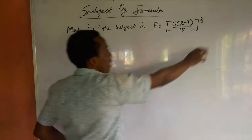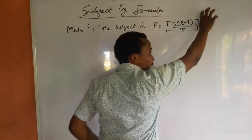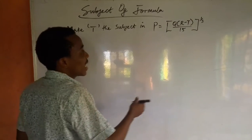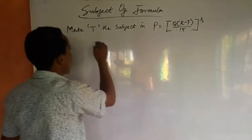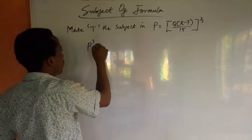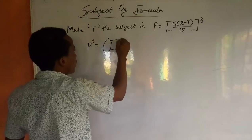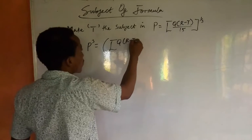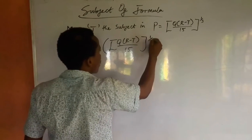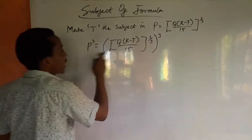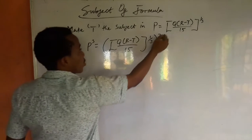So to make t the subject, we need to get rid of this 1 over 3. To do that, we need to take the cube of both sides. So we have P³ equals the right side cubed. We've taken the cube of both sides, so this cancels.